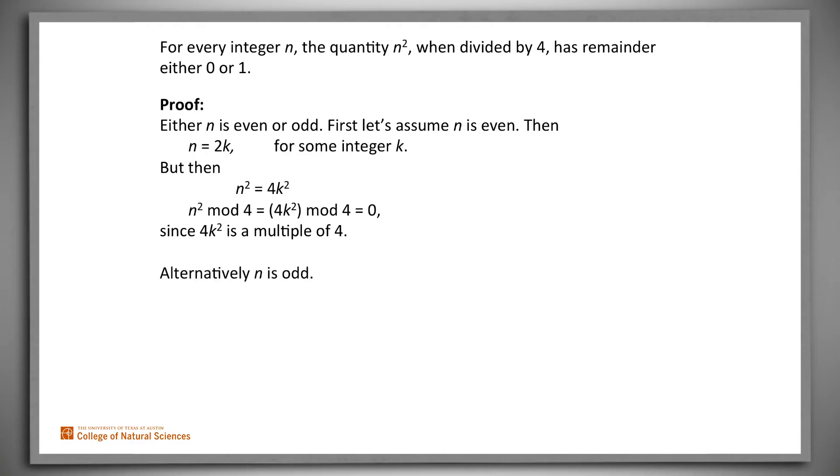Alternatively, n is odd. Then n equals 2k plus 1 for some integer k. But then n squared equals 4k squared plus 4k plus 1, and n squared mod 4 equals the quantity 4k squared plus 4k plus 1 mod 4.